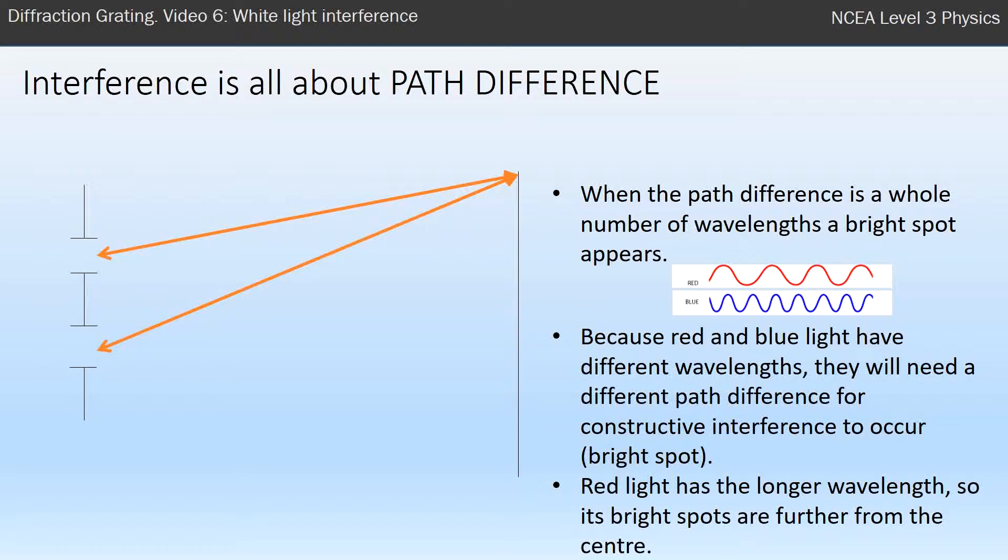So red lights are on the outside and blue lights, because of the smaller wavelength, only need a smaller path difference. They are on the inside of the interference pattern compared to the central spot.